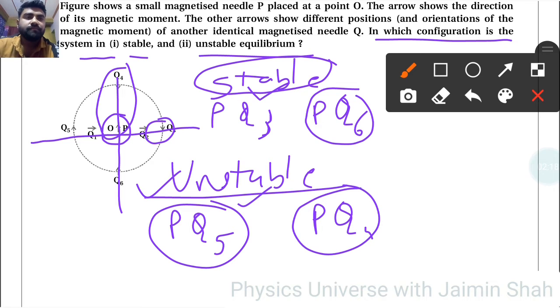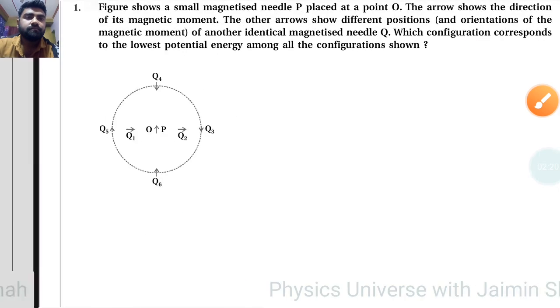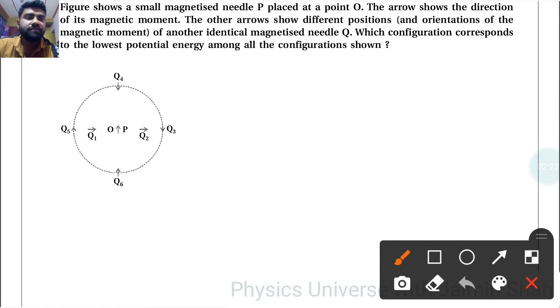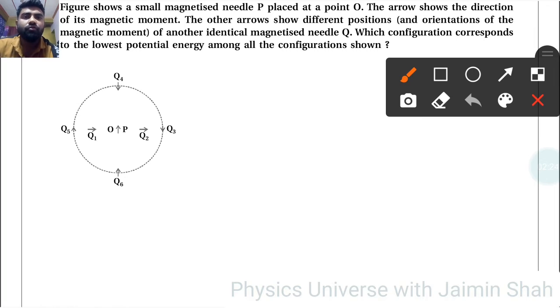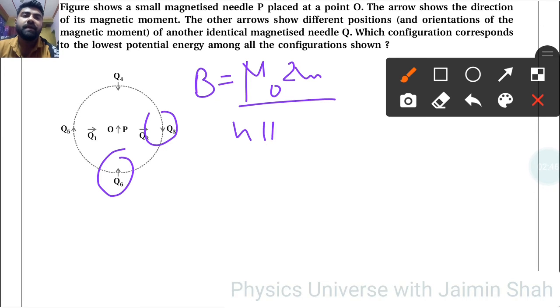And then next question: which configuration corresponds to the lowest potential energy among all the configurations shown? So, lowest potential energy—it is in between Q3 and Q6. Why? See, first of all we know that B is equal to μ₀2m upon 4πr³.